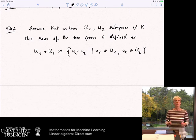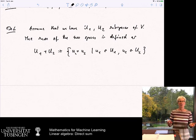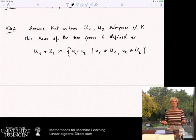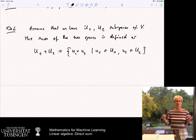Now in this definition we did not exclude so far that u1 and u2 overlap, for example. But in many cases we are more interested in spaces that do not overlap. And ultimately we want to say something like there is a space and its complement. And to be able to do that we need to define what is the direct sum.